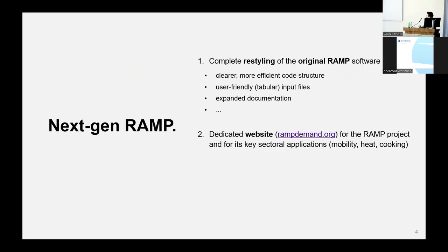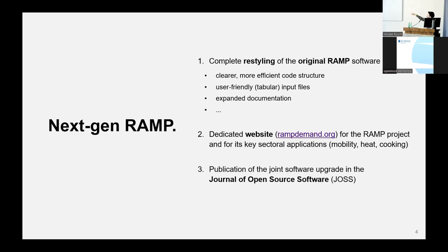And that's what we did. Over the last few months we worked together, giving life to what we call the next-gen version of RAMP, which is far more efficient, more professional, and more user-friendly, with full documentation and a new website at ramp.energy where you can find all the information. We are also now aiming for a joint publication in the Journal of Open Source Software, so that this joint effort can be set in stone.